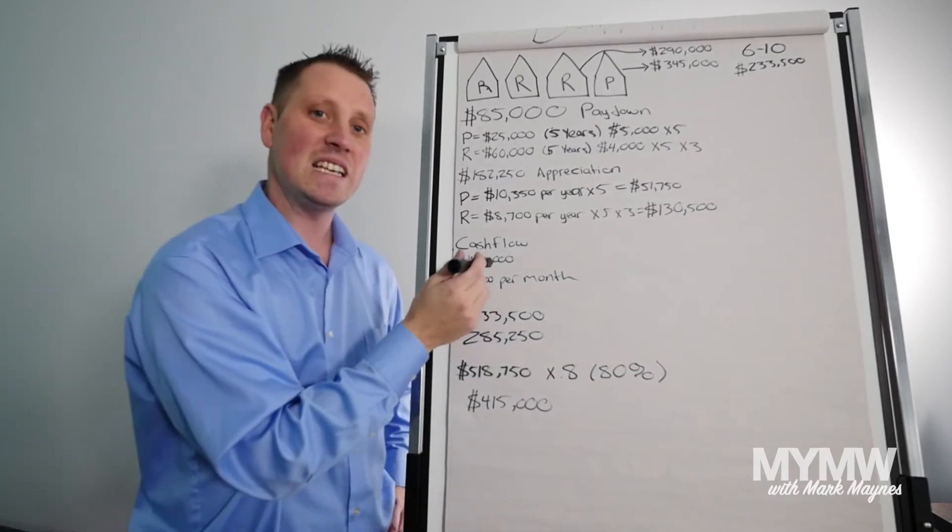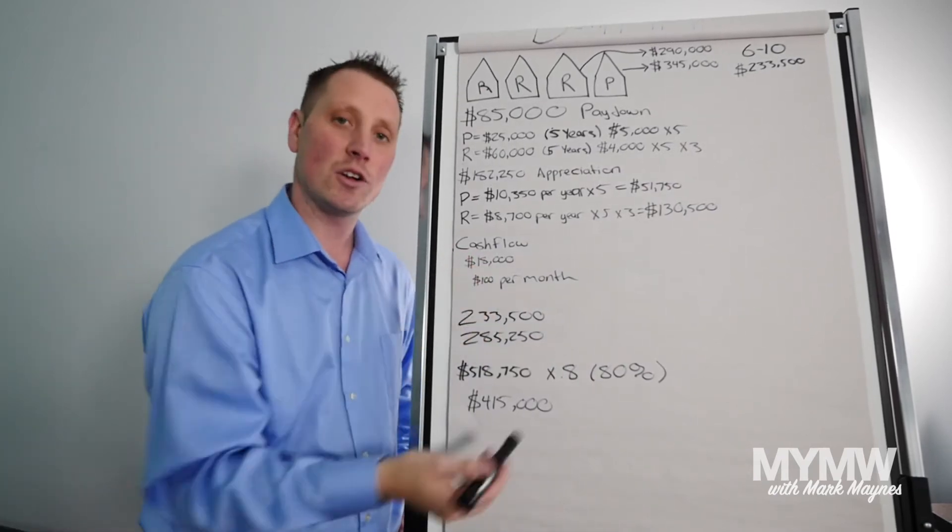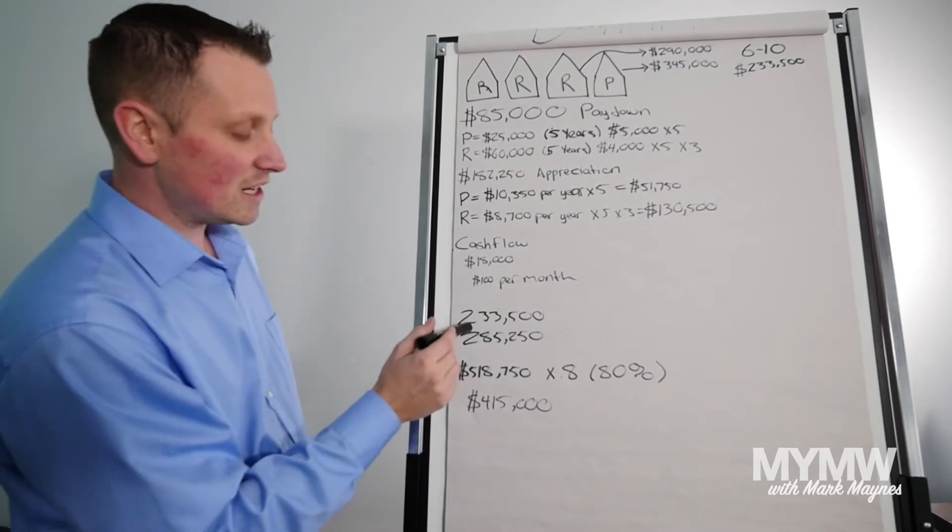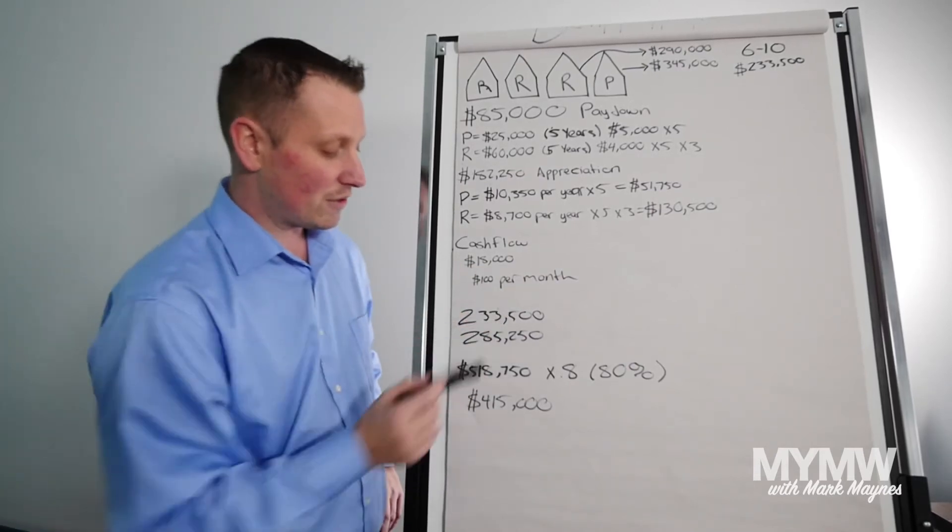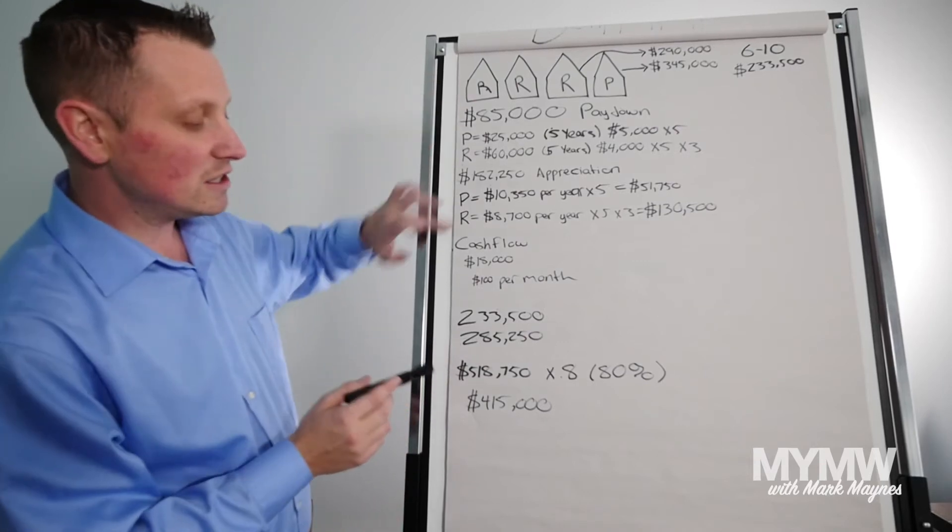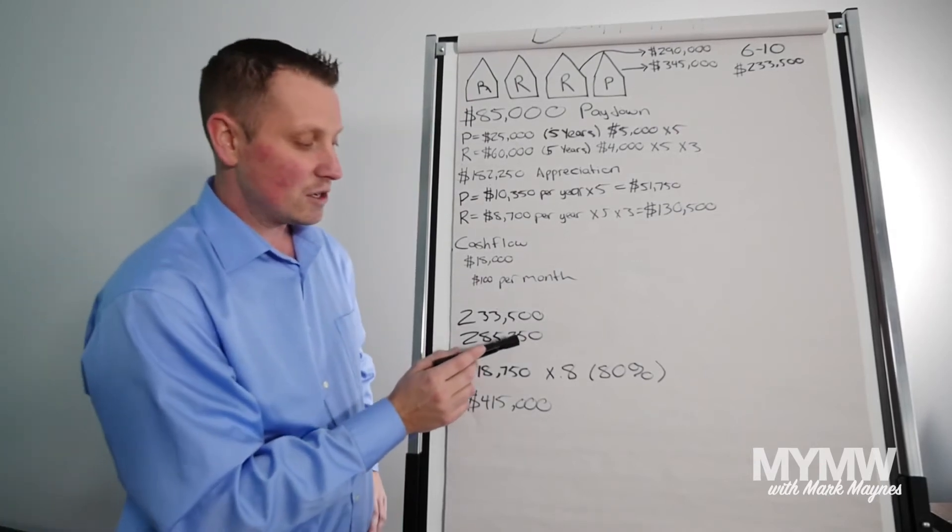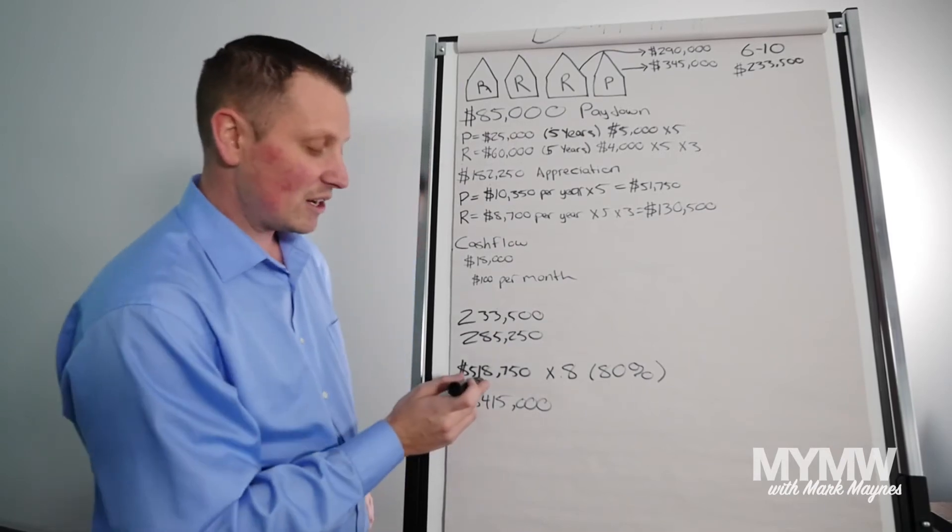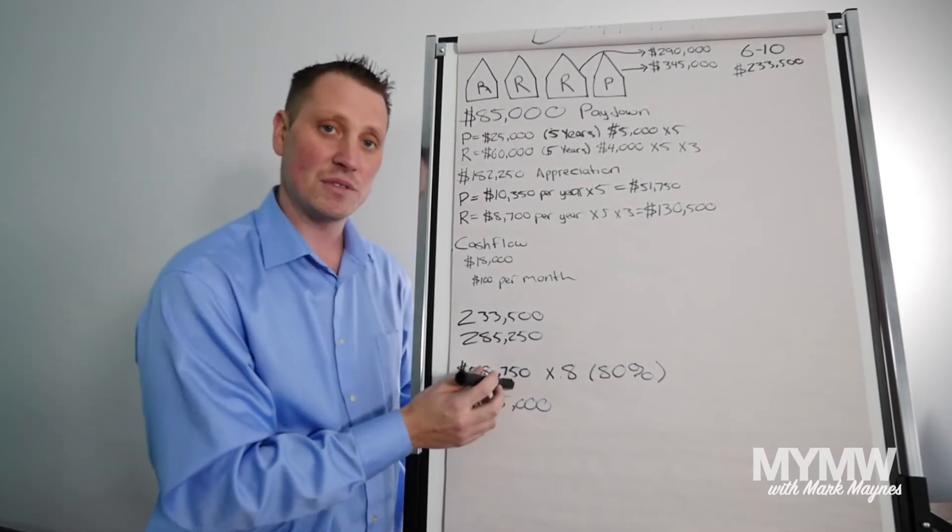Cash flow, $18,000 because again, $100 a month. Now we have three properties. So we're going to take the original $233,500 plus we add all these up. That's $285,250. Brings us to a total of $518,750.